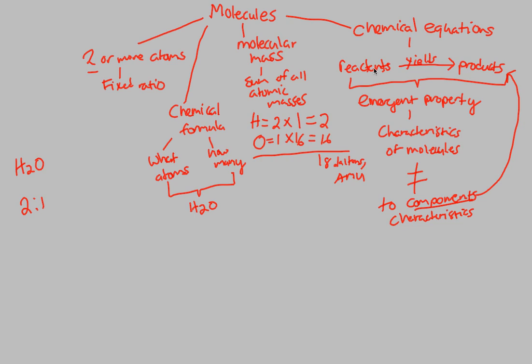There's a difference between just these reactants independently, these independent reactants that are in any chemical equation. They do not necessarily have the same characteristics as the eventual products because you have all of this going on. You have this chemical process going on, this chemical reaction that is causing emergence, causing an emerging property to occur because of this idea that the characteristic of the molecules is not equal to the component's characteristics.